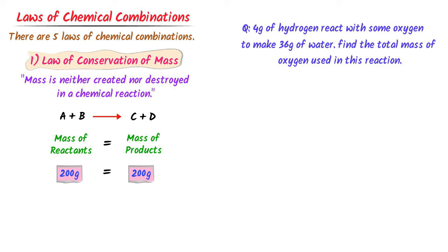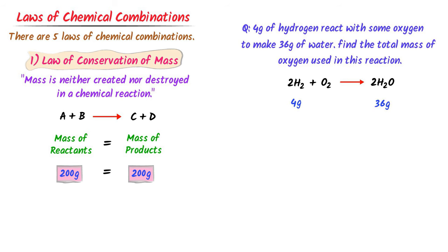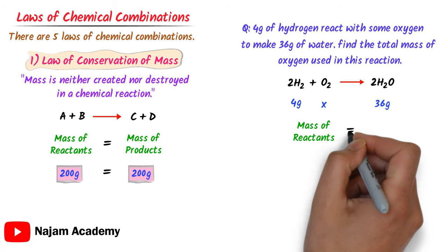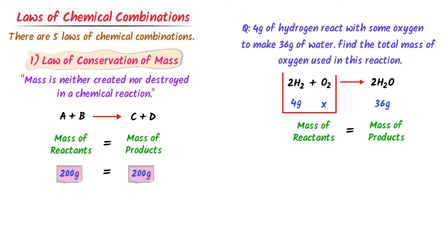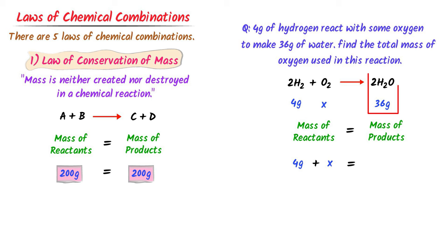Given data: 4 grams of hydrogen is used, and 36 grams of water is formed. We are asked to find the total mass of oxygen used. Let X be the mass of oxygen used with 4 grams of hydrogen gas to form 36 grams of water. According to the law of conservation of mass, 4 grams plus X grams equals 36 grams. After calculation, X equals 32 grams. Thus, 32 grams of oxygen is used in this reaction.